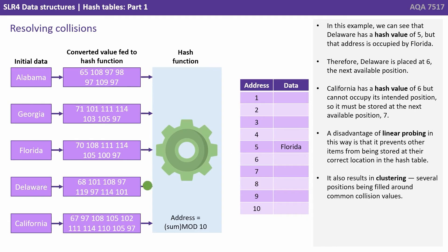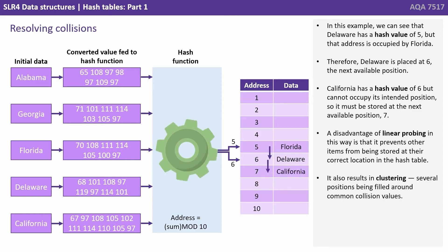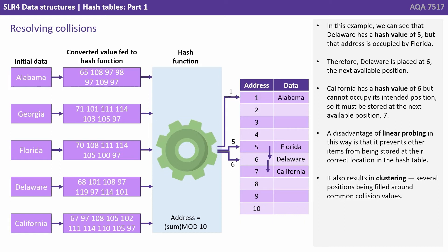In this example, we can see that Delaware has a hash value of 5, but the address is occupied by Florida. Therefore, Delaware is placed at 6, the next available position. California now comes in and has a hash value of 6, but can't occupy its intended position, so must be stored at the next available position 7. A disadvantage of linear probing in this way is that it prevents other items from being stored at their correct location in the hash table. This can also result in what's called clustering — several positions being filled around common collision values.